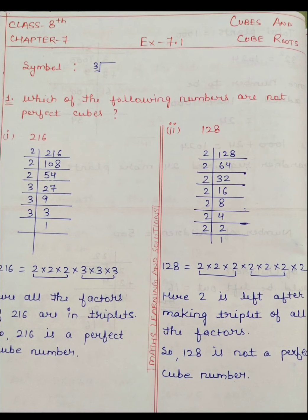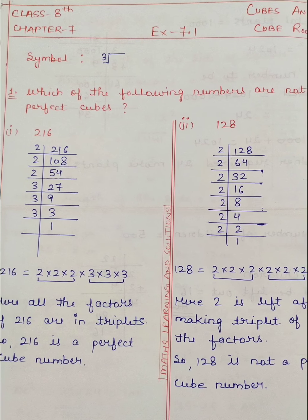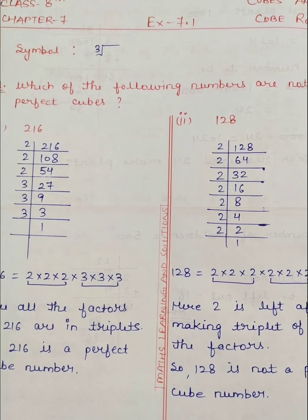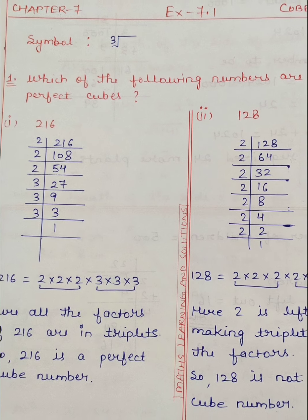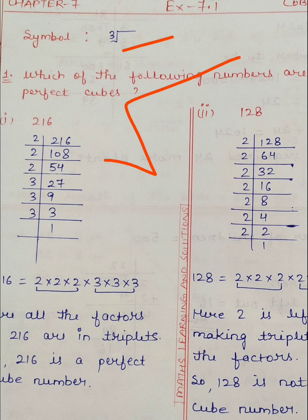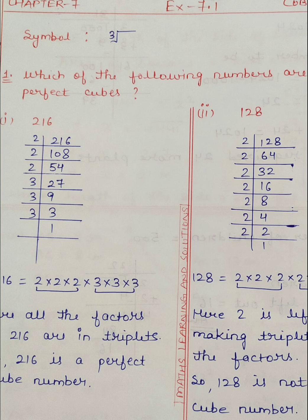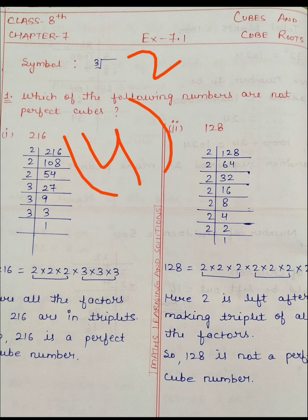Hello everyone, let's start Exercise 7.1 of Chapter 7, that is Cubes and Cube Roots for Class 8. Firstly, you can see here what is the symbol of cube root. The square root symbol has only this sign, but the cube root symbol has a 3 written above it. Just like in square, if someone asks what is the square of 4, you put power 2.